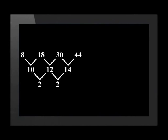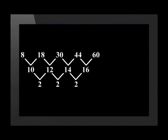The second difference is the difference between the first differences. The second difference has a constant value of 2. Using the constant second difference of 2, we can determine the next first difference is 16, which makes the next term 60. The next first difference is 18, making the next term 78.